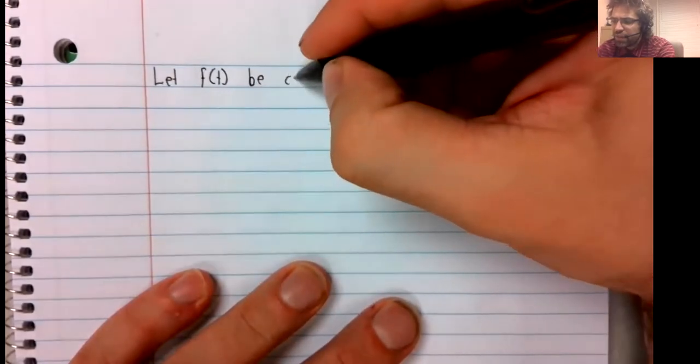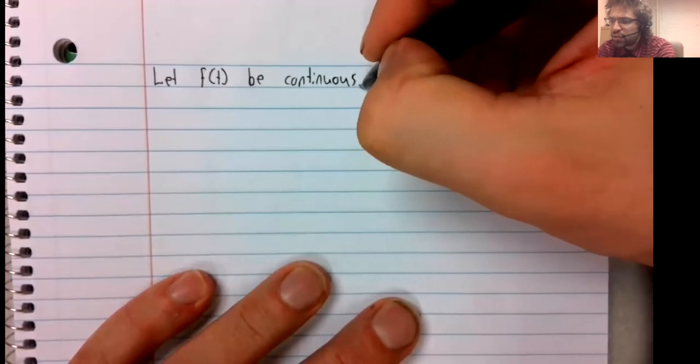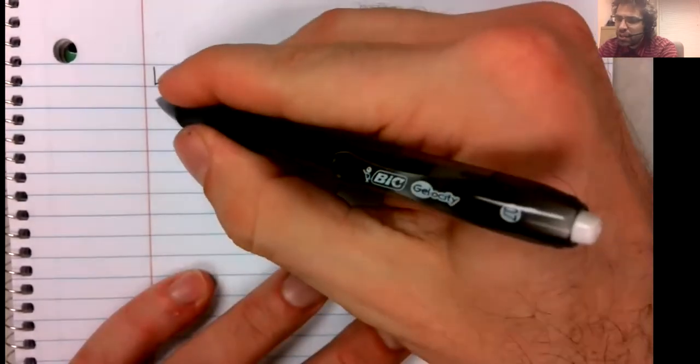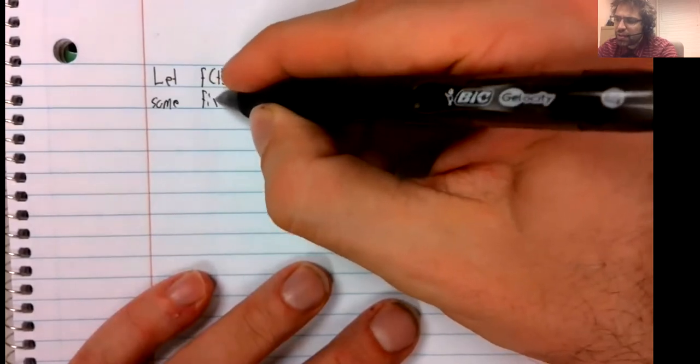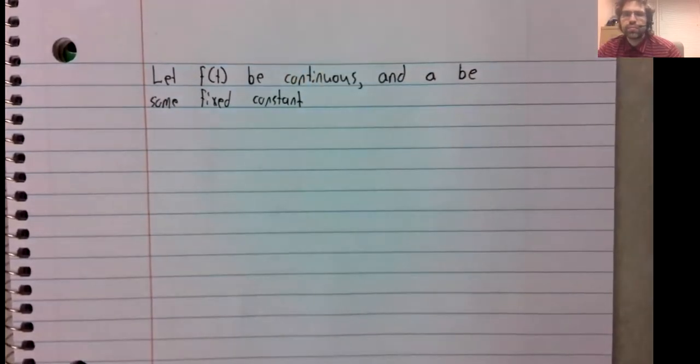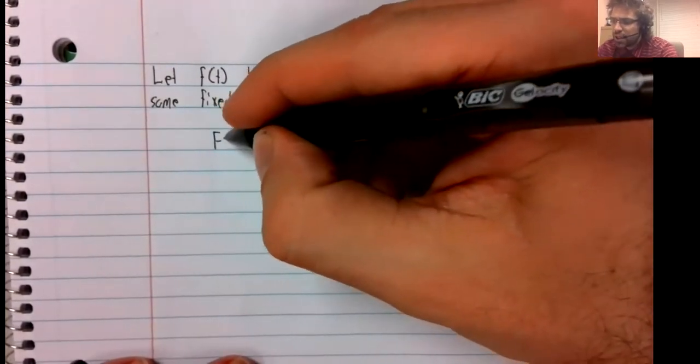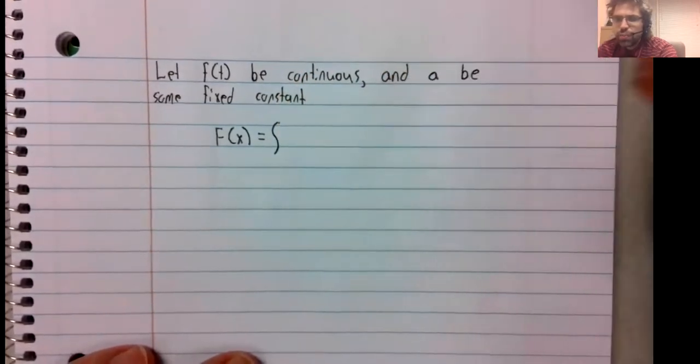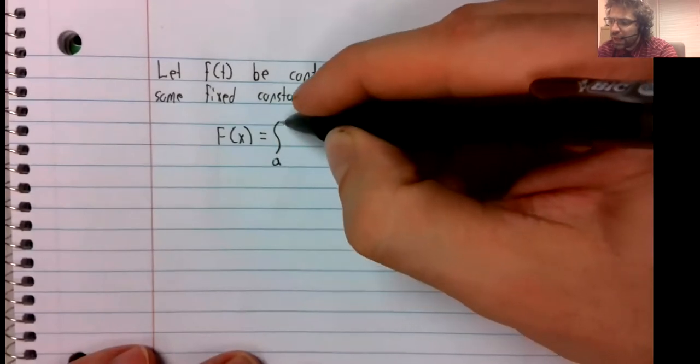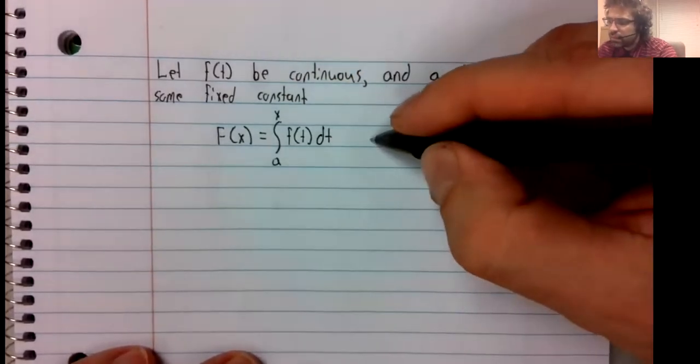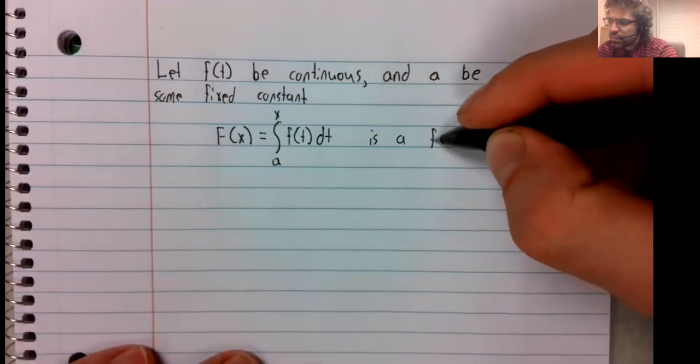Let f(t) be continuous and a be some fixed constant. Then F(x) equals the integral from a to x of f(t) dt is a function.